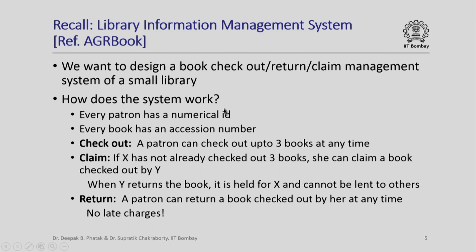To recap, here is how we wanted our system to work. Every patron would have a unique numerical ID, every book would have a unique accession number, and a patron can check out up to three books at any time.